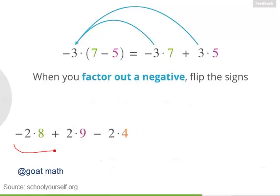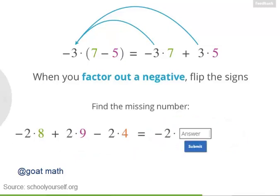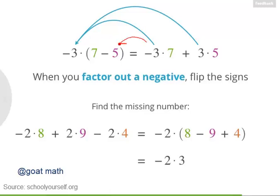For your final challenge, take a look at this expression which includes 3 terms. Factoring out gives you negative 2 times what number? Nicely done. Flipping this first minus sign gives you positive 8. Flipping this plus sign gives you minus 9. And flipping this minus sign gives you plus 4. So factoring out, you get negative 2 times 3. So whether you're distributing negatives or factoring them out, you should flip the sign for every term.